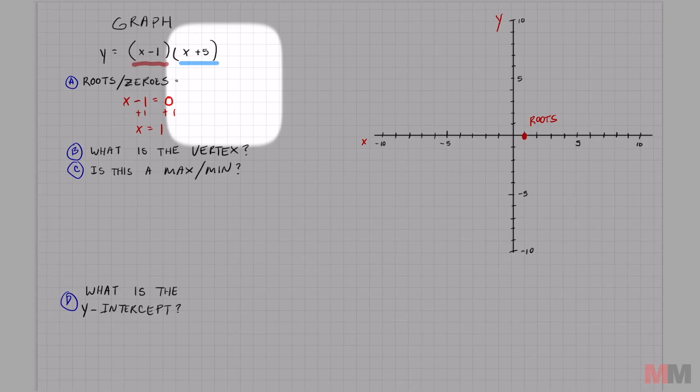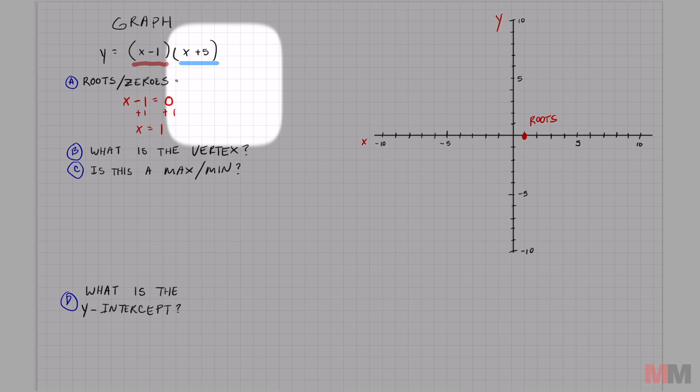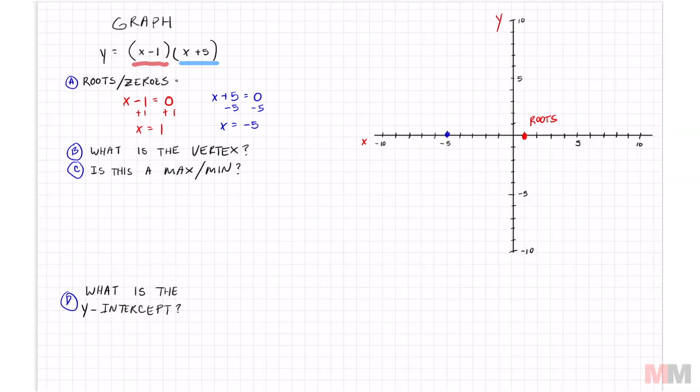To get another point, we just take the second parentheses, the one in blue, and we do the same thing. x plus 5 equals 0. Get x by itself, just one step, and you get x equals negative 5. Here's my other point, and this time we'll call it 0. That way you're familiar with both words. Not too bad.